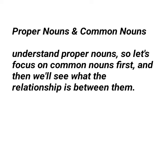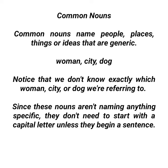Let's focus on common nouns first, and then we will see what the relationship is between them. Common nouns name people, places, things, or ideas in a generic way — for example: woman, city, dog. Notice that we don't know exactly which woman, city, or dog we are referring to. Since these nouns aren't naming anything specific, they don't need to start with a capital letter unless they begin a sentence.